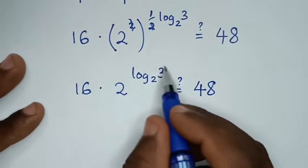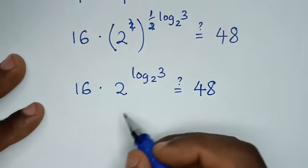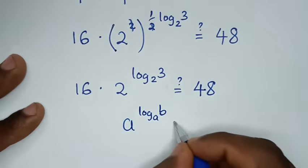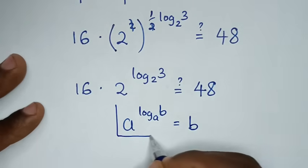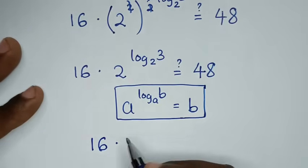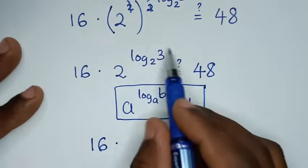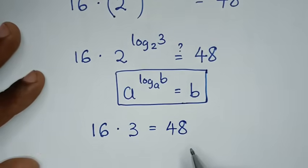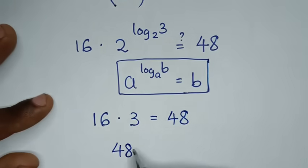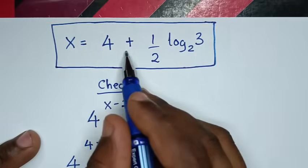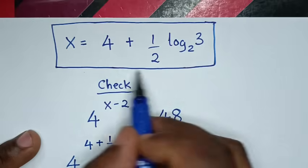Then from this part here, 2 power of log of 3 base 2 is in the form of A power of log of B base A, which is equal to B. So by applying this rule it will be 16, then times 2 power of log of 3 base 2, which is the same as 3. So times 3 is equal to 48. Now 16 times 3 is 48, which is equal to 48. So left side and right side are equal. Then it is true for the value of x is 4 plus one half log of 3 base 2, which is the simplest form.